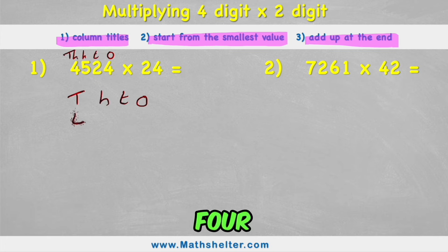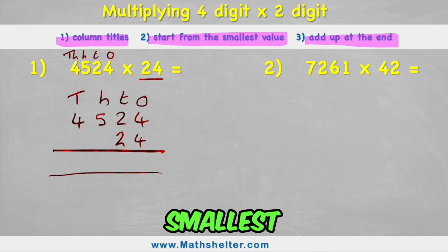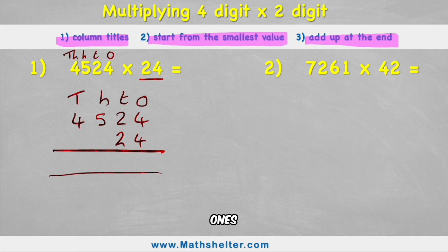Now I can put my 4524 in place. And then I'm multiplying it by 24 so I can see that I have two tens and four ones. Put my equals line and I'm ready to begin. Now step two says start from the smallest value. Well the smallest value is our one column. And the smaller number is 24. So this four here is going to be our starting position.